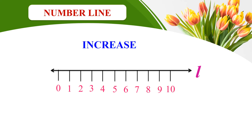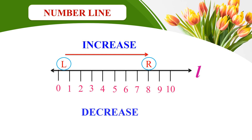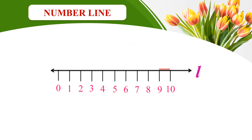Zero is on the left side and ten is on the right side. When you move from left to right, the value is increasing. When you move from right to left, the values are decreasing. The distance between two numbers is called unit distance.